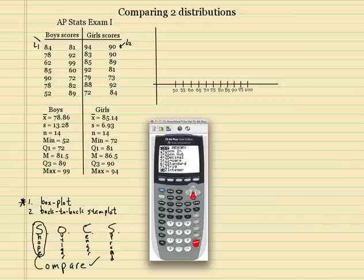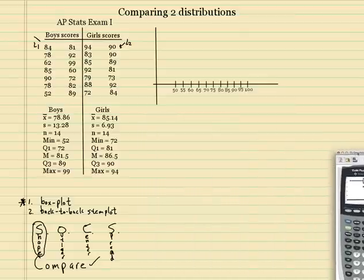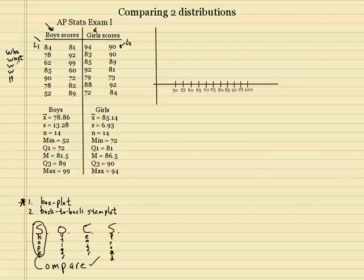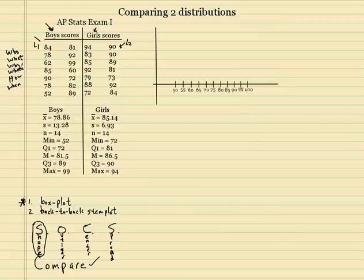Now remember, you always want to start off one of these problems and make sure that you understand what your context is. And here are my two distributions. So this gives you a rough outlook of what it's going to look like when I do it by hand. Follow those steps and have it on your calculator. So who? Who are we interested in? We have two whos — we have the boys and the girls. The what? We're interested in their exam scores from the first exam.